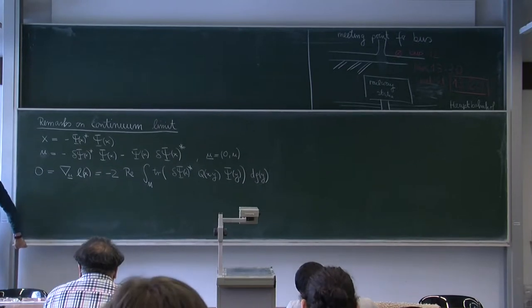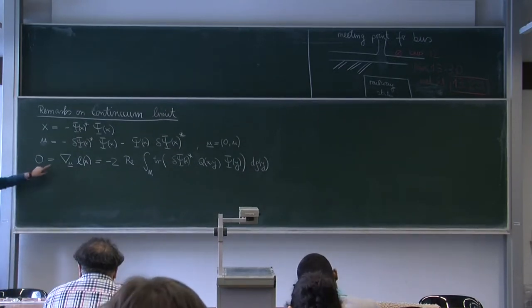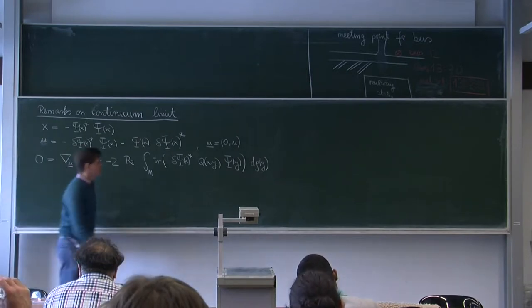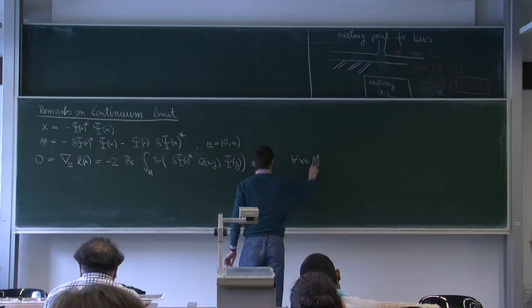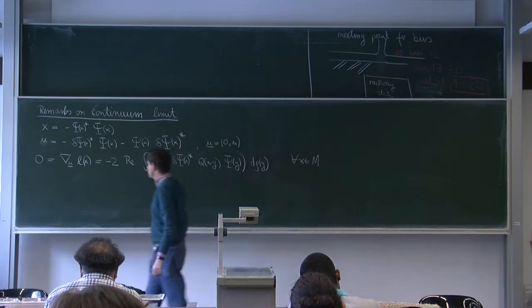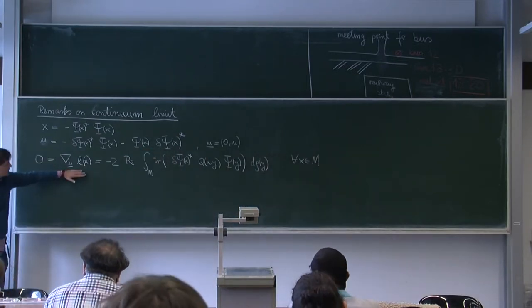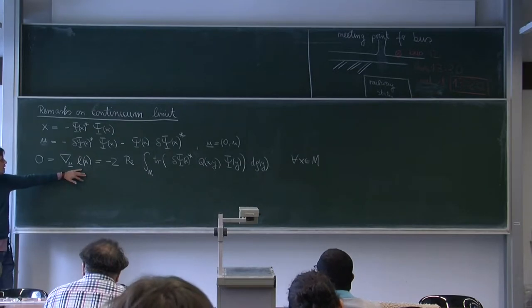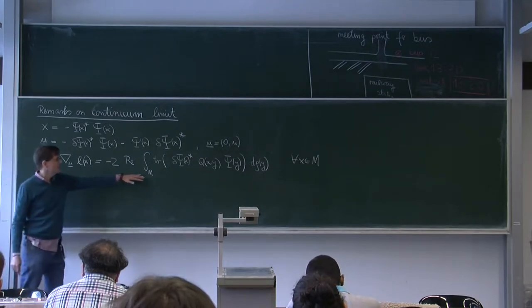Our weak Euler-Lagrange equations read like this, for all x in M — so these are equations in our space-time. They take this form here. And now it's a longer computation, but it turns out that this holds.